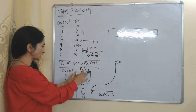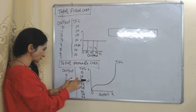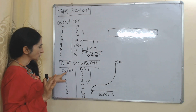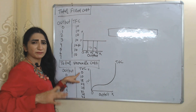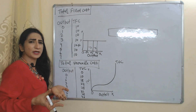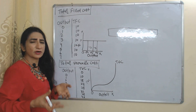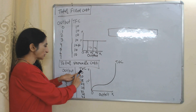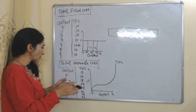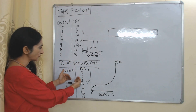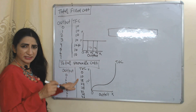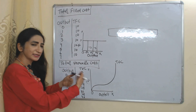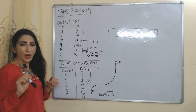Here you can see our total variable cost — in the first column we have output and the second column shows total variable cost, which changes according to change in production. At zero output, total variable cost is zero. If we are not producing output, then why would we purchase raw material or hire labor? That is why at zero output, total variable cost remains zero. But as output increases, total variable cost initially increases at a decreasing rate.